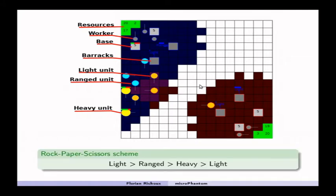So in Micro RTS, there is a kind of rock-paper-scissors scheme in the sense that the light unit is good usually against the range unit, which is good against heavy, which is good against light.